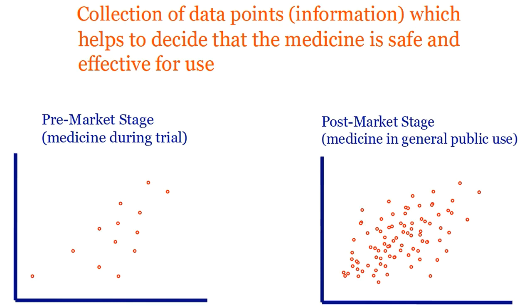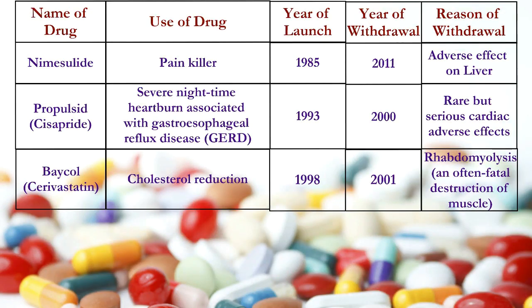Well, there are many such examples. I have listed a few in this slide. Let me elaborate the first example for more clarity. Nemosalite was one of the preferred prescribed painkillers as it was having lesser events of gastritis. But when it was found in post-marketing studies that Nemosalite can cause liver damage, it started getting banned in various countries.